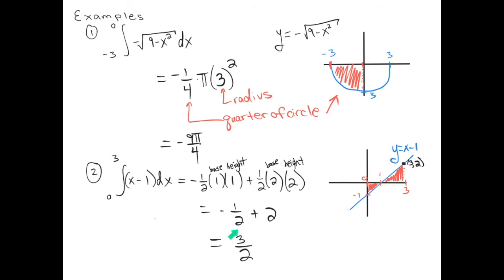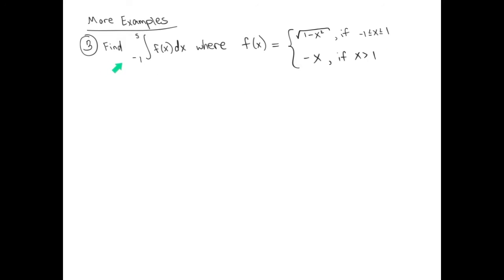I'm a bit cavalier about adding these fractions. I assume you have the sophistication to figure out how to add fractions yourself. If the video is going too fast, pause the video, take the initiative, and do it on your own. We're going to do one more example using a piecewise function. The function has square root of r squared minus x squared as one portion and y equals negative x as another portion.